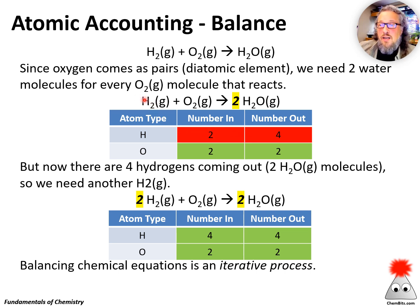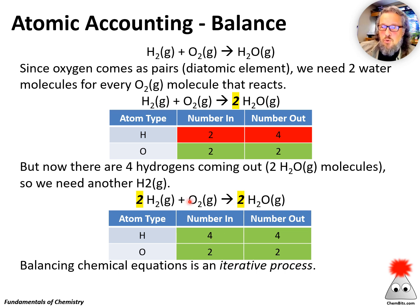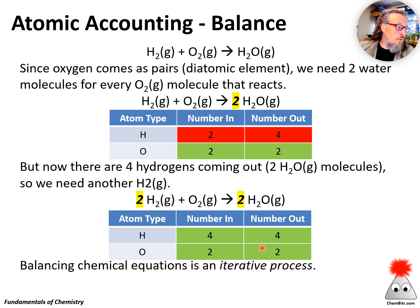Hydrogen is all coming in together, so let's just try a 2 in front of that. That gives me four hydrogens going in, four hydrogens coming out, two oxygens going in, two oxygens coming out — and we've got a balanced chemical equation. The atomic accounting works out for us.